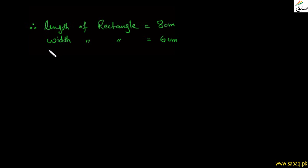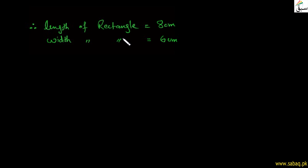y = 6 ہو تو x = 8، اور y = 8 ہو تو x = 6۔ Solution set میں دو order pairs آتے ہیں۔ چونکہ rectangle کی length اور width پوچھی ہے: length = 8 cm اور width = 6 cm۔